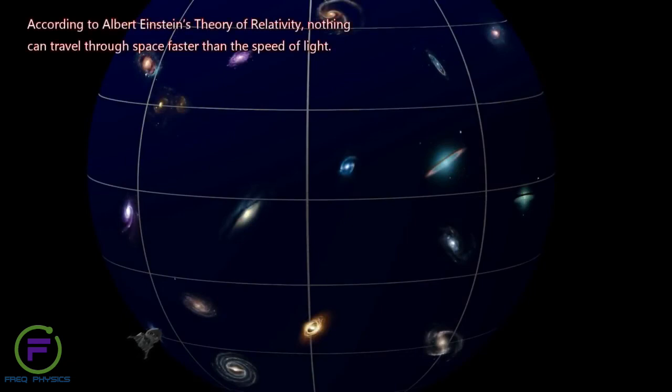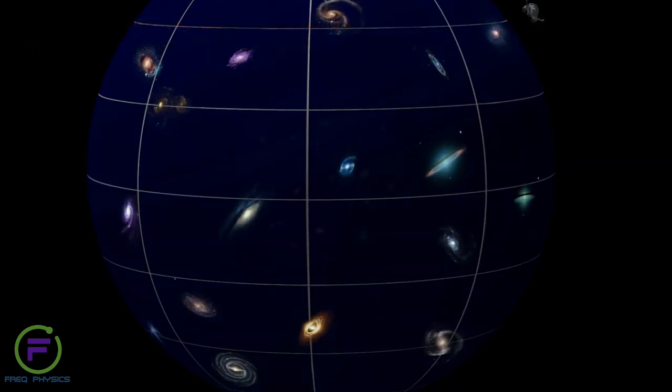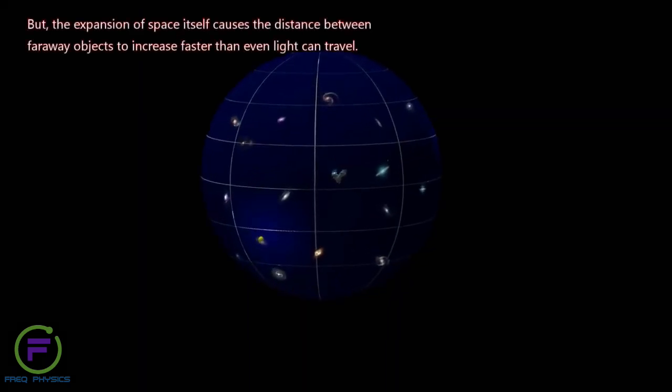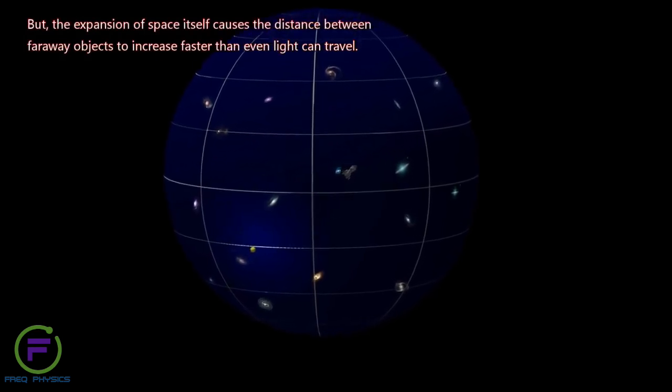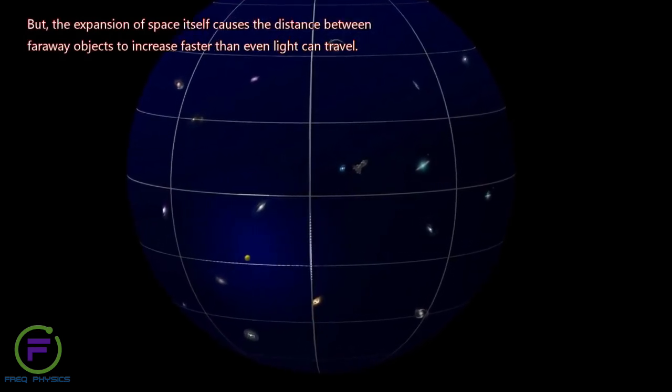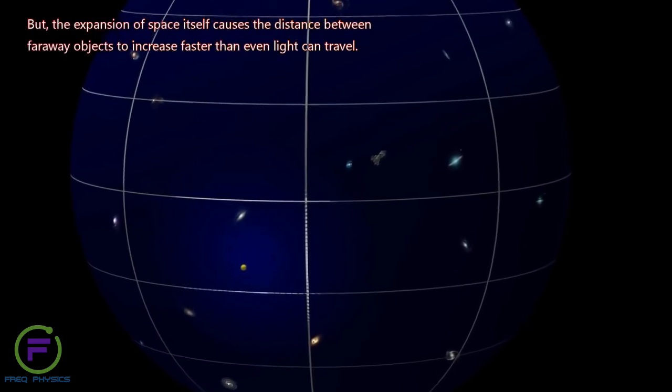According to Albert Einstein's theory of relativity, nothing can travel through space faster than the speed of light. But the expansion of space itself causes the distance between far away objects to increase faster than even light can travel.